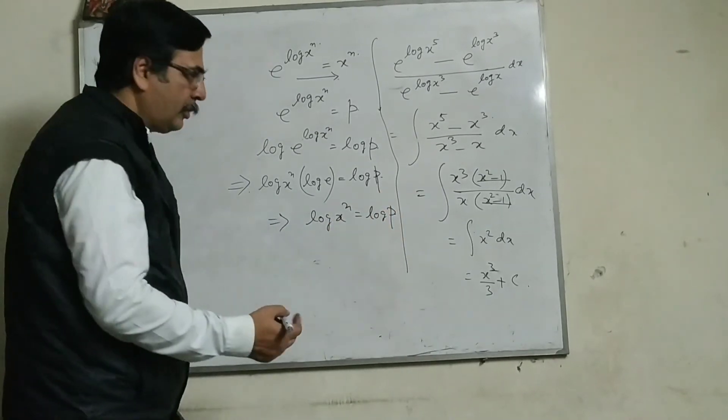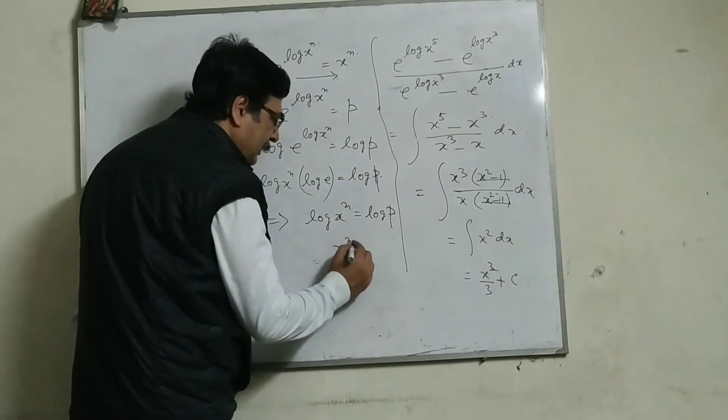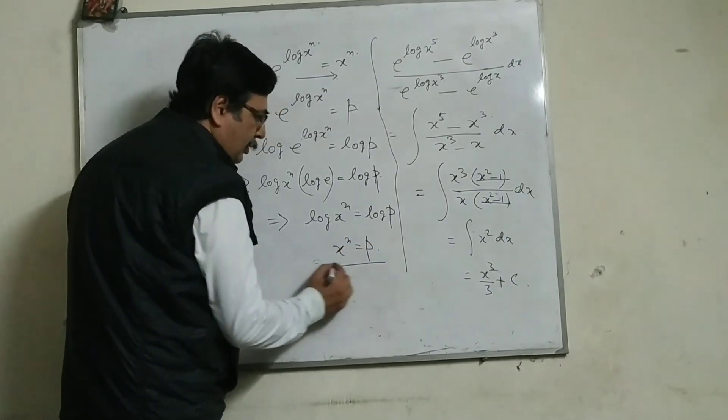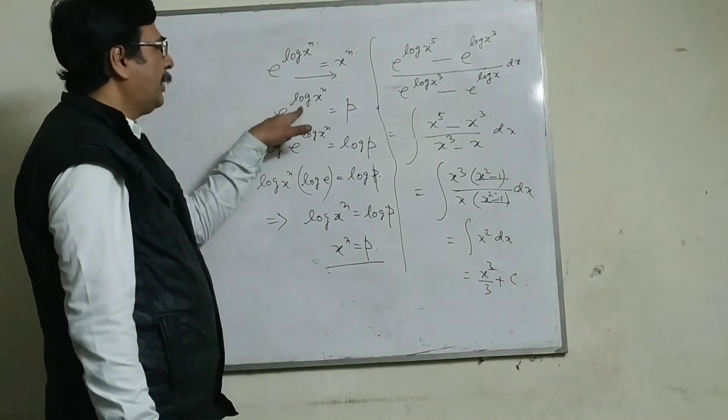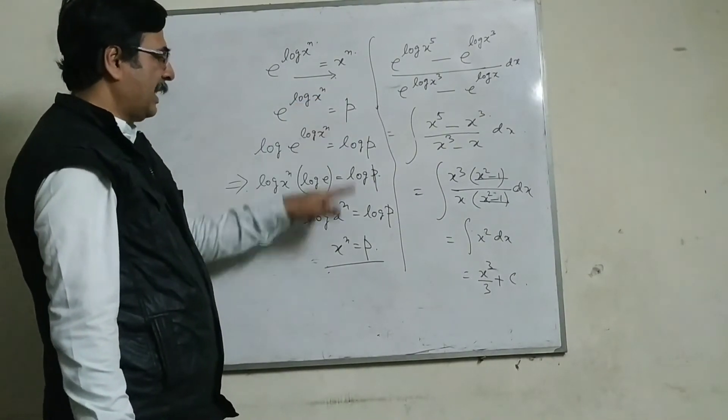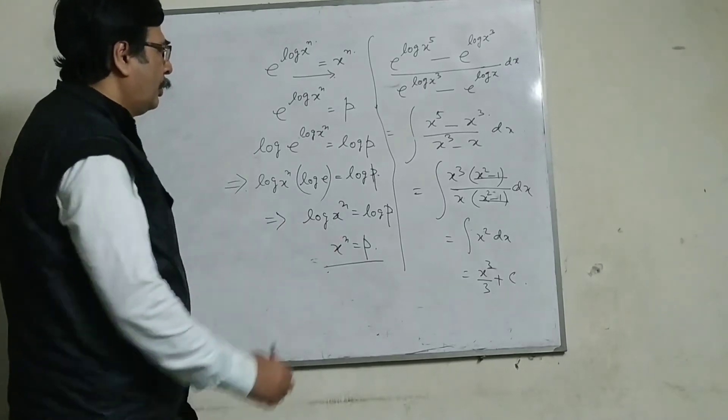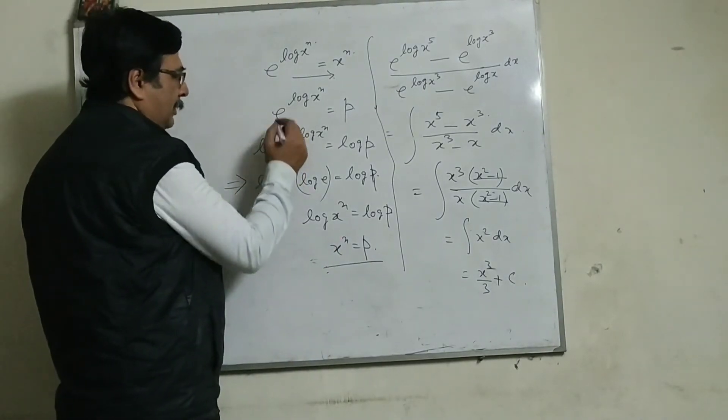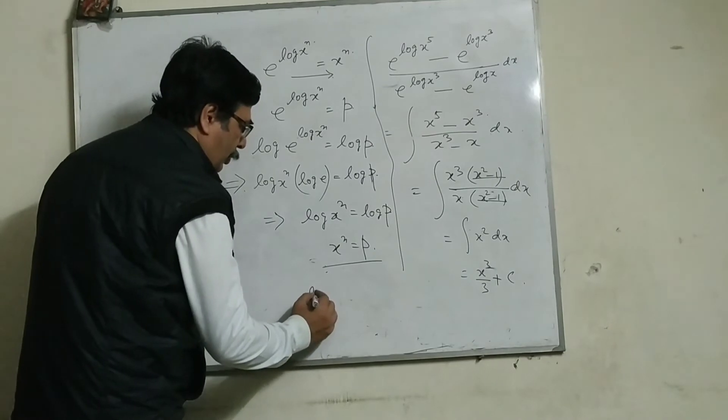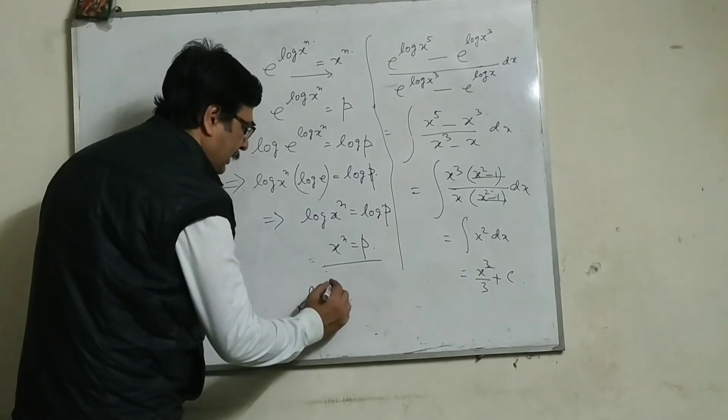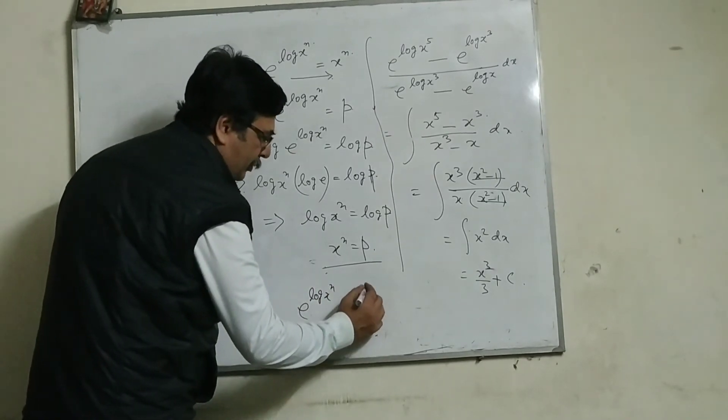Now, taking anti-log, we can write x to the power n is equal to p. So, what I have taken here, e to the power log x to the power n is equal to p, and I have proved here p is equal to x to the power n. So, I can conclude that e to the power log x to the power n is equal to x to the power n.